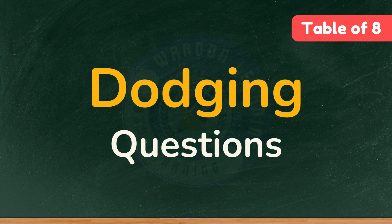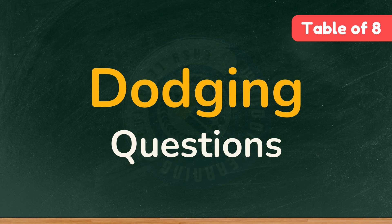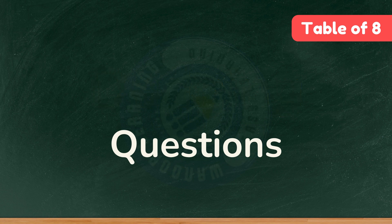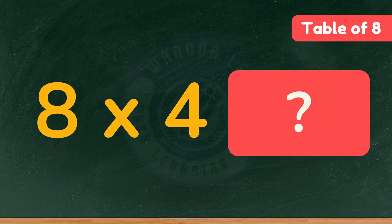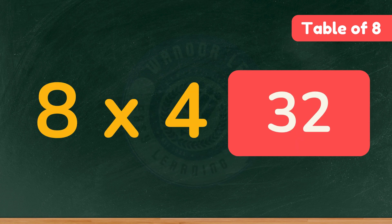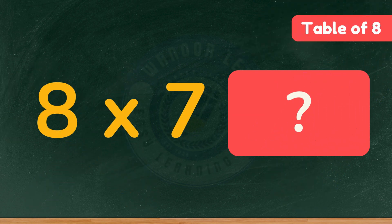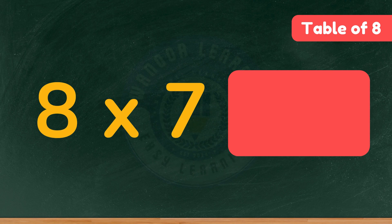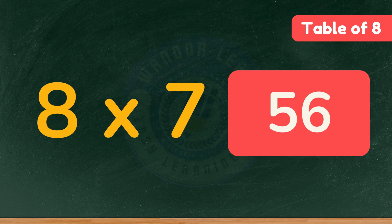Alright, now it's time for dodging questions. I'll ask you multiplication questions from the table of eight in a random order. Be quick and answer loudly. Let's start. What is eight times four? Yes, thirty-two. What is eight times seven? Correct, fifty-six.